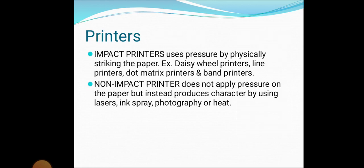Printers are divided into two types: impact and non-impact printers. Impact printers use pressure by physically striking the paper. Examples are daisy wheel and dot matrix printers. Non-impact printers do not apply pressure on the paper but instead produce characters by using lasers. That is known as a non-impact printer.